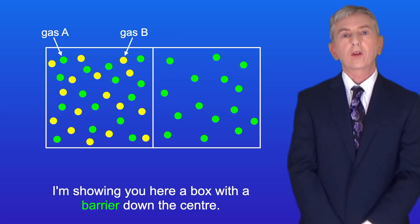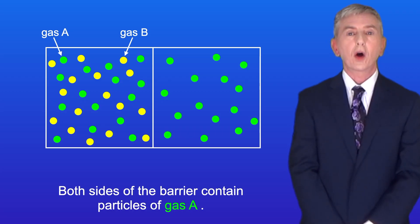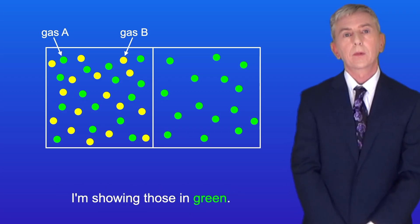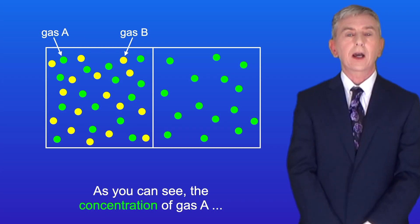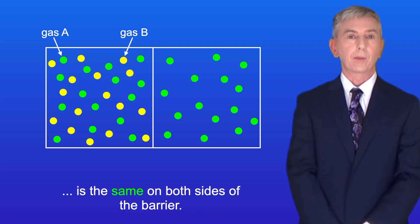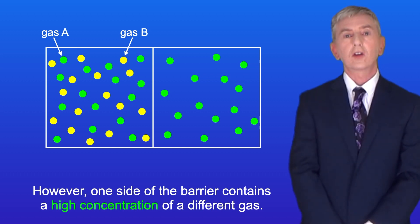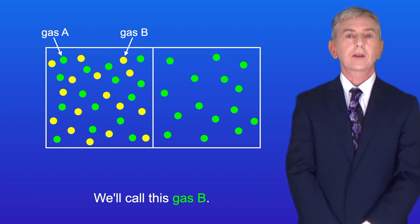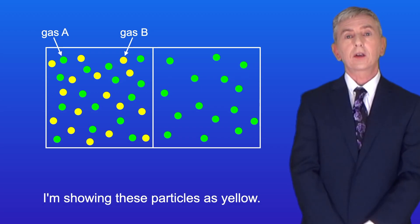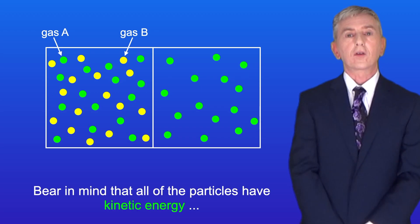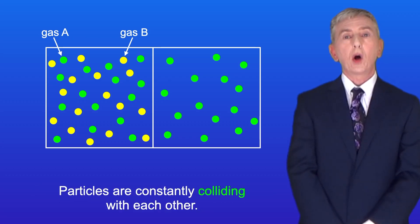I'm showing you here a box with a barrier down the centre. Both sides of the barrier contain particles of gas A, and I'm showing those in green. As you can see, the concentration of gas A is the same on both sides of the barrier. However, one side of the barrier contains a high concentration of a different gas. We'll call this gas B, and I'm showing these particles as yellow. Now bear in mind that all of the particles have got kinetic energy as they're moving randomly, and particles are constantly colliding with each other.